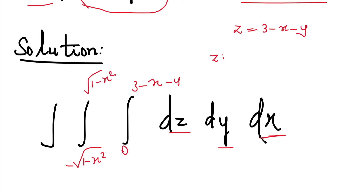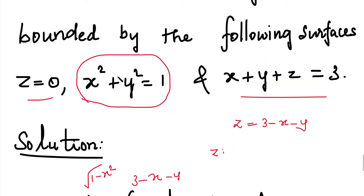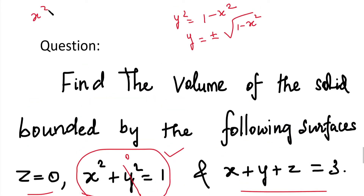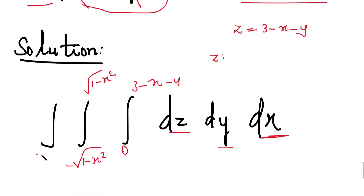Last, for dx, we find the limits of x. Using the second equation and substituting y equal to 0, x² equal to 1, so x equal to plus or minus 1. The lower limit of x is minus 1 and the upper limit is plus 1. So x varies from minus 1 to plus 1.